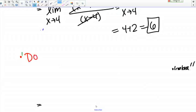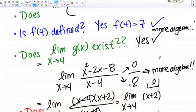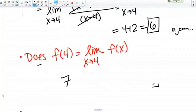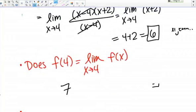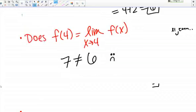The final question, does the function value at 4 equal the limit as x goes to 4? Okay, so what was the function value at 4? Well if we scroll back up here, we see that it was 7, and what about the limit? Well that was 6, so those are not equal. So unfortunately, this criteria is not met.